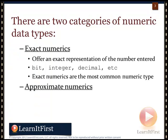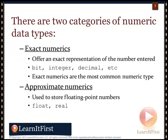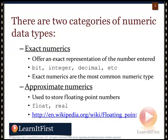Approximate numerics are for storing floating point numbers. The reason it's called approximate is that the value stored in the database can differ slightly from what's presented — maybe rounded at the 38th decimal point. We're dealing with float and real data types here. There's a Wikipedia link in the PDF for this video if you want to read more about floating point.